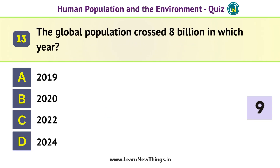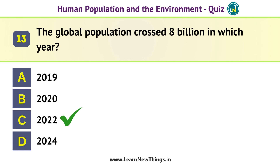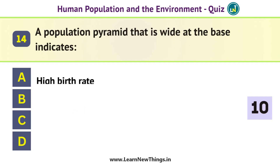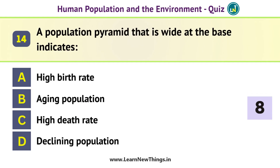The global population crossed 8 billion in which year? 2022. A population pyramid that is wide at the base indicates a high birth rate.